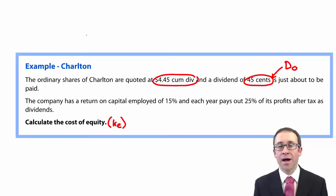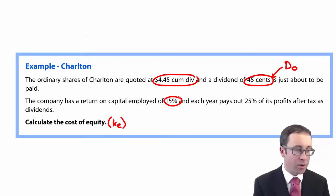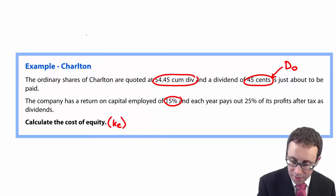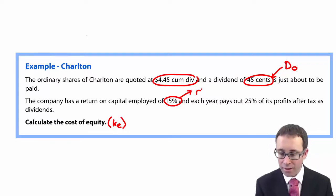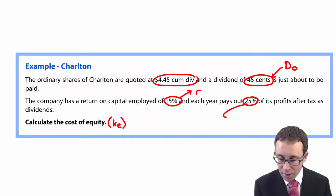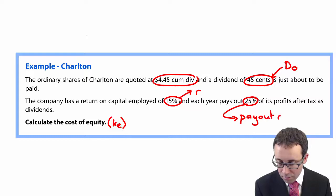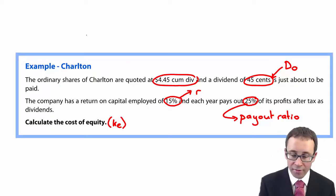It doesn't tell us how to calculate the growth rate directly, but we can use the information given. The return on capital employed is 15% — that is R. And we're told that we pay out 25% of our profits after tax as dividends, so that is your payout ratio of 0.25.